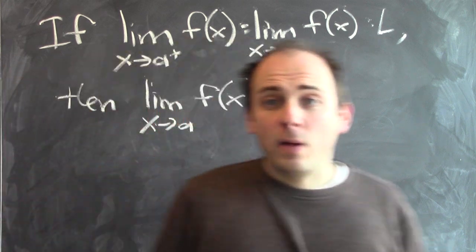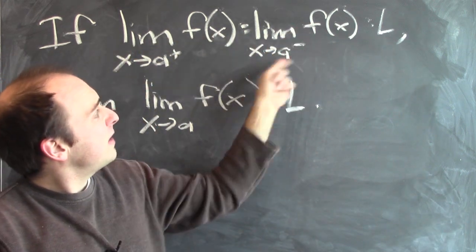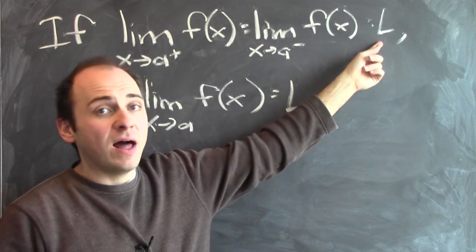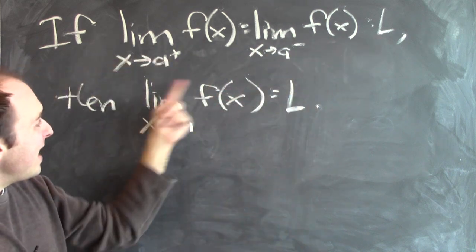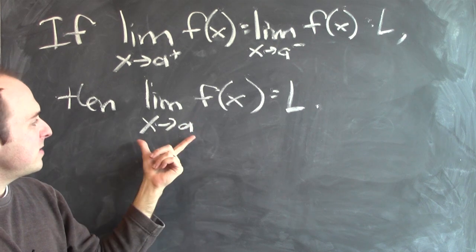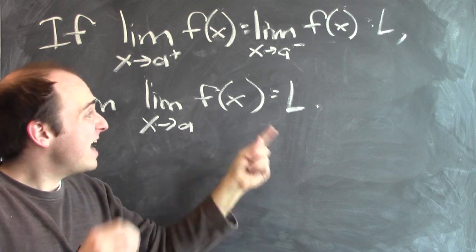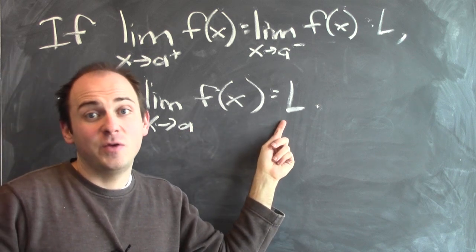It works the other way as well. If the limit from the right-hand side is equal to the limit from the left-hand side, let's call our common value L, then the two-sided limit, the limit of f of x as x approaches a, no plus or minus, so this is just the usual old limit, then this limit exists, and it's equal to that same common value L.